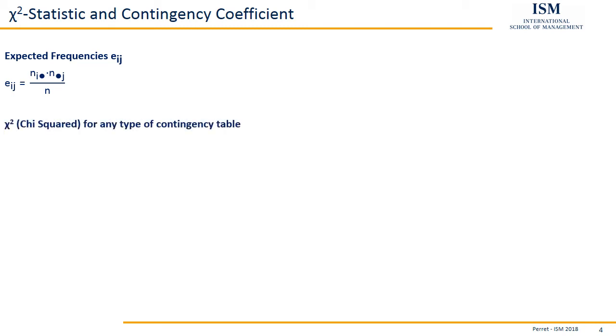Here we have this in a table. We can see the E11 is n1 dot times n dot 1 divided by n. The same for the other three as well. Then we have one table with the absolute values, the original values nij, and one table with the expected frequencies Eij.